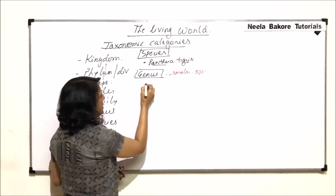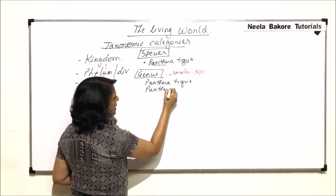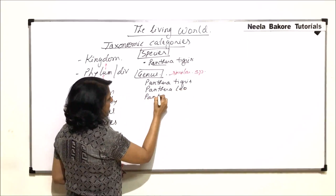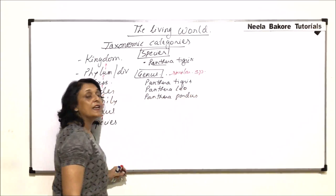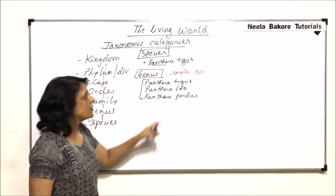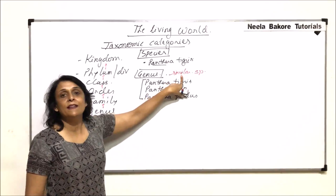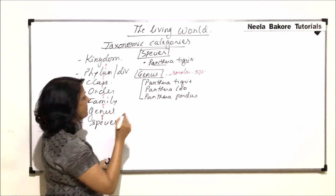Let us write down some examples. If we write Panthera tigris, that is tiger. Then we write Panthera leo, that is lion. And Panthera pardus, that is leopard. That means the tigris species, leo species, and pardus species are all placed in the same genus. We are talking of similar species because they all belong to the cat family. All these big cats are very similar to each other, and that is why these similar species are placed under one genus.